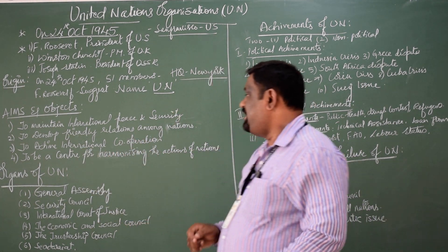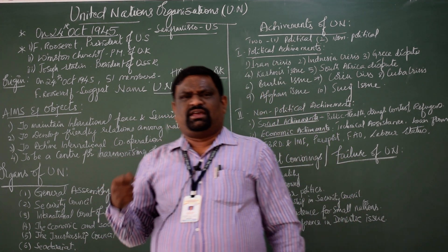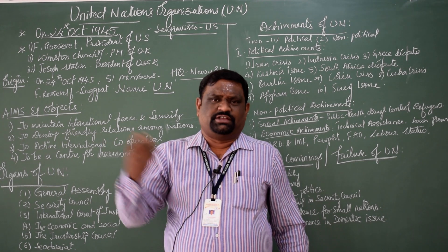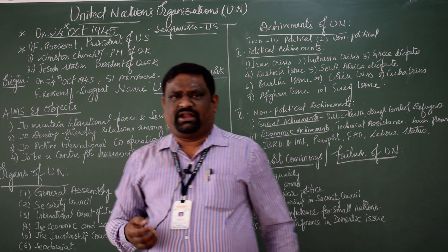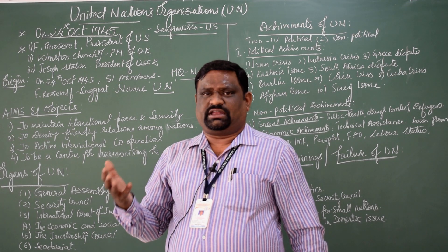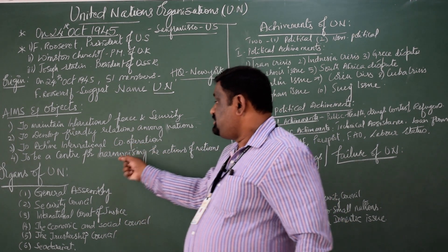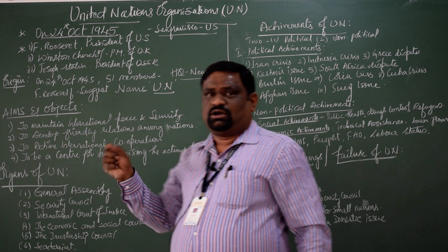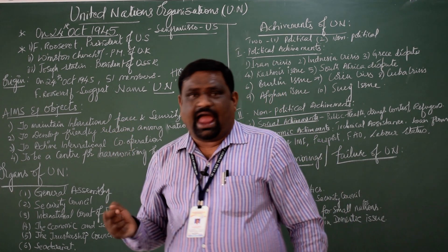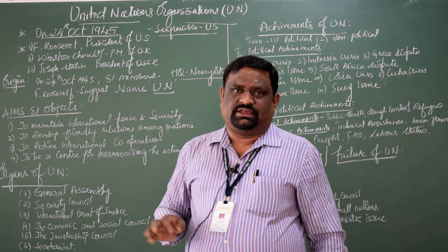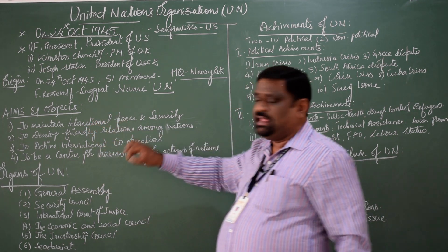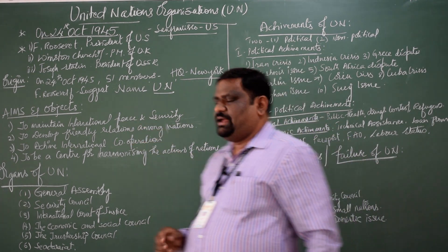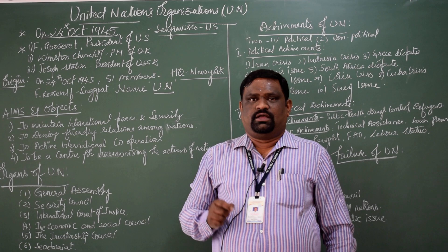Coming to the fourth objective, to be a center for harmonizing the actions of the nations: today countries like Pakistan, Afghanistan, some African states, or even China may say that they are independent, they have sovereignty, and must take their own decisions. But still, the UN cooperates and coordinates as well as harmonizes the activities which occur among the nations. These are the four very important objectives and aims of the UN.